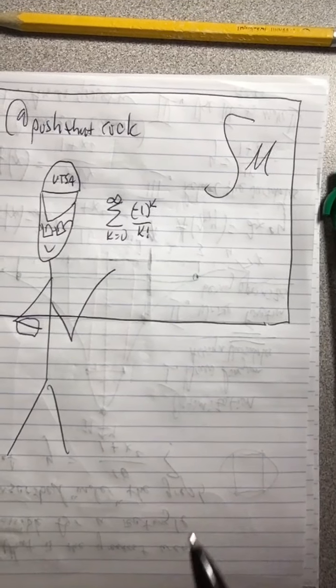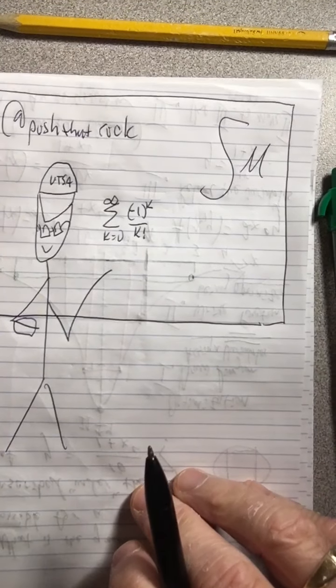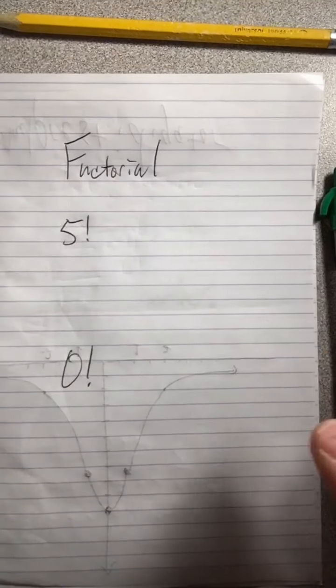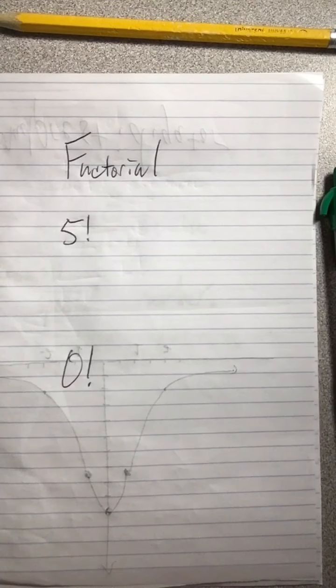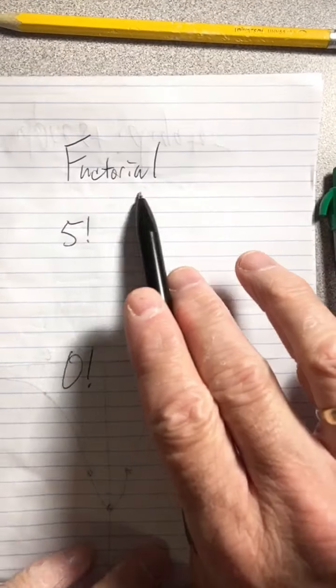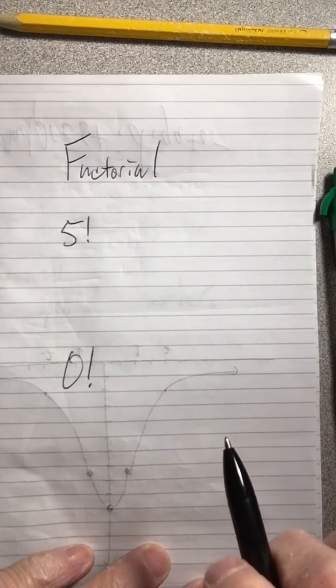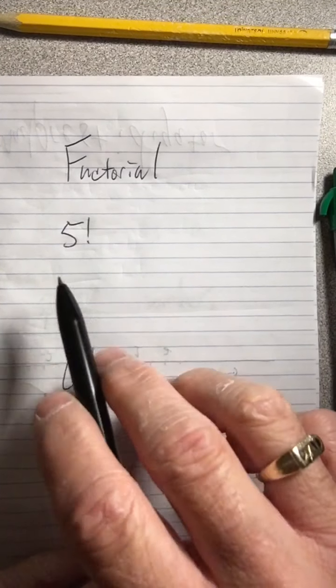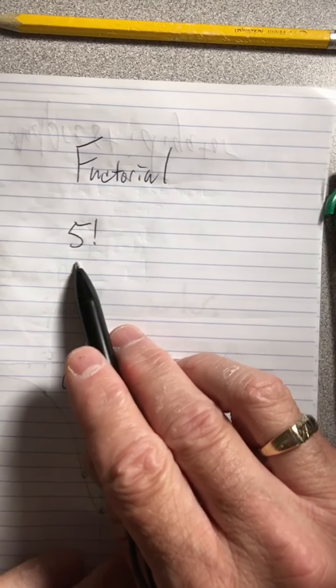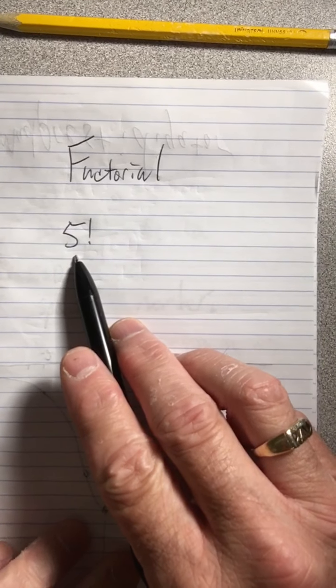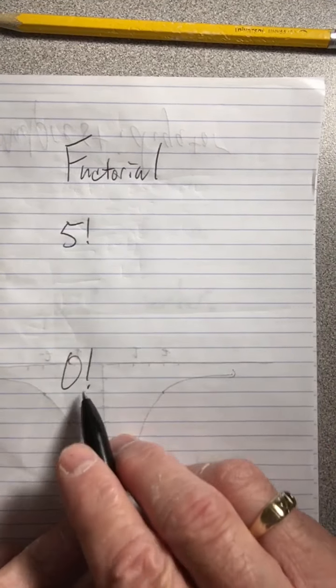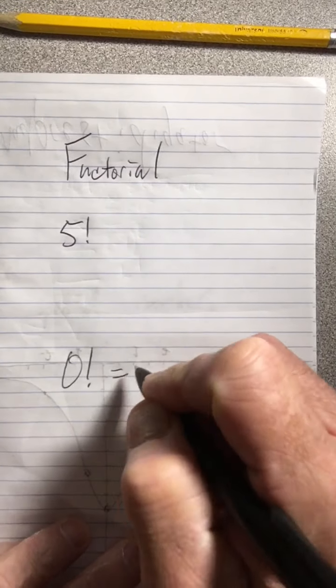To understand this lesson, we have to understand this mathematical object called a factorial. The common definition is just for whole numbers, and for zero it's very special. Zero is just defined to be one, separately from the normal definition.